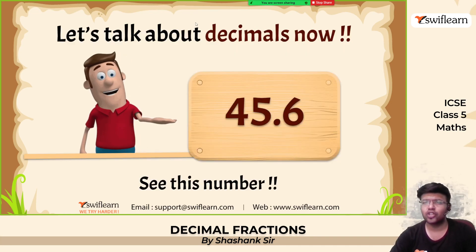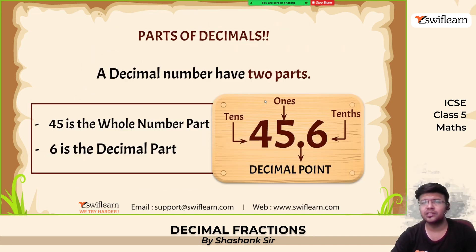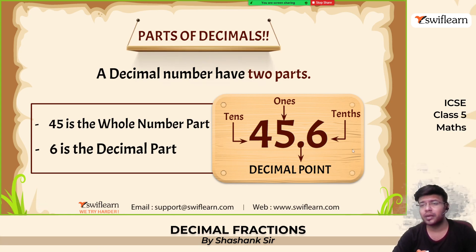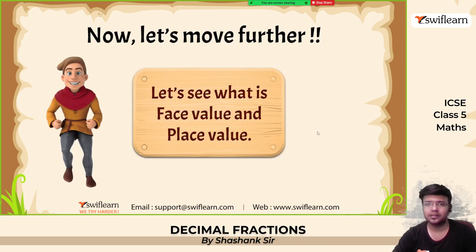Now let's talk about decimals. See this number — a decimal number has two parts: the whole part, which is 45, and the decimal part, which is 6. This is the ones place, and this is the tenths place.